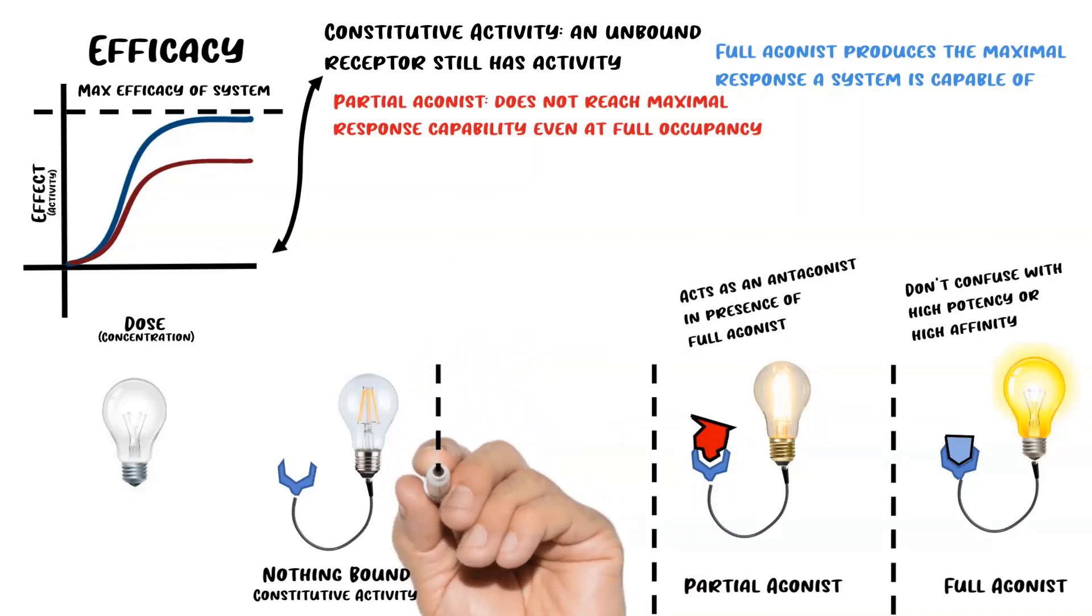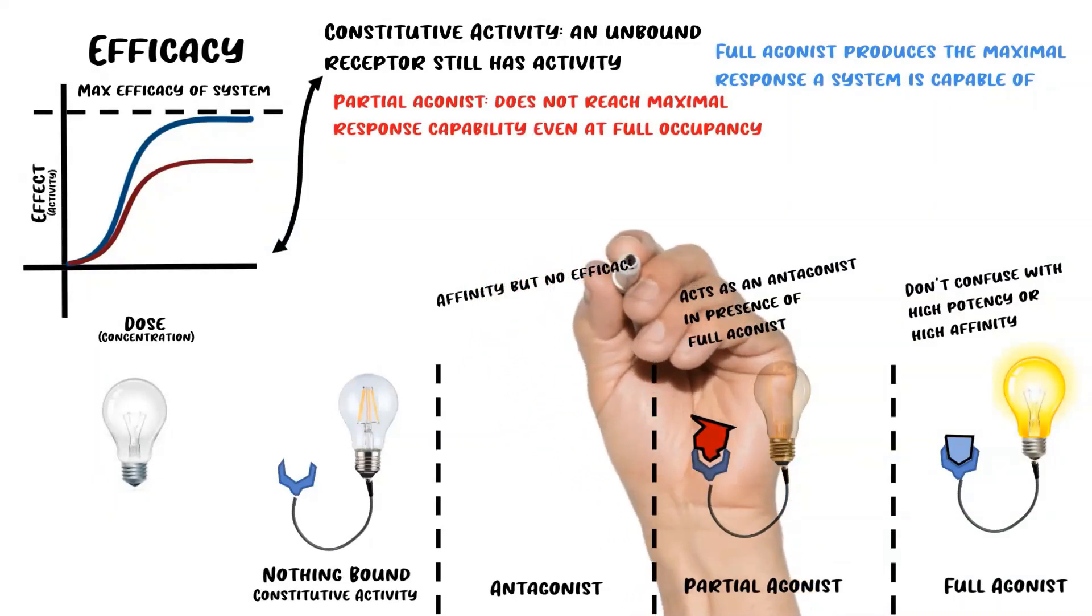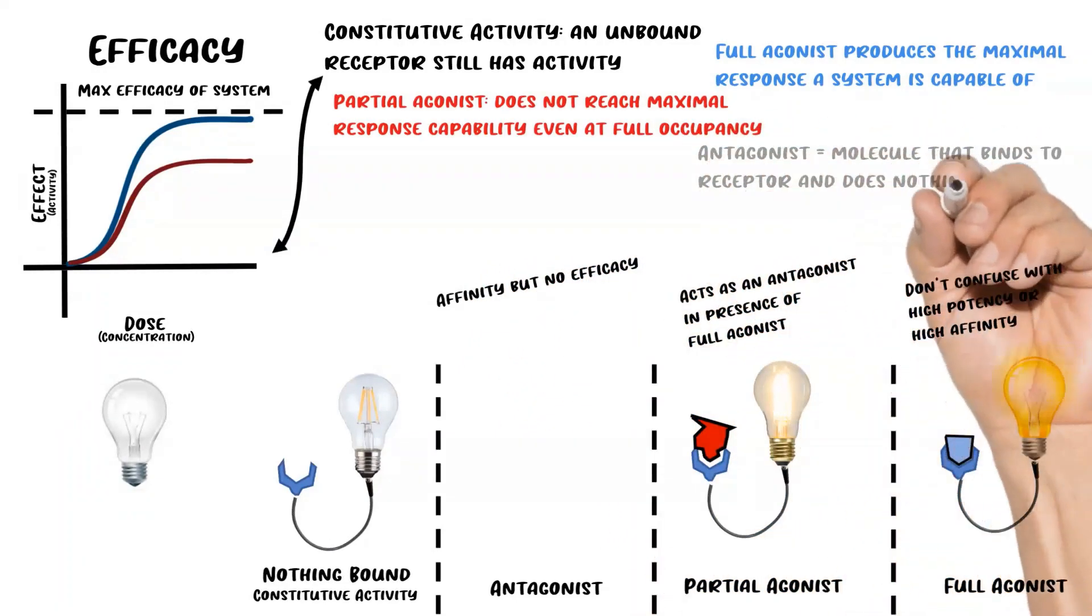The next thing this brings us to is antagonists. Antagonists are drugs that have affinity but no efficacy for the receptor. One thing that isn't that intuitive is that antagonists on their own don't really do anything.